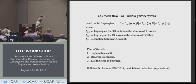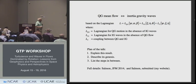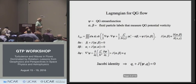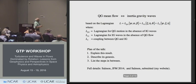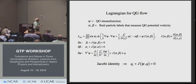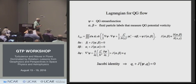You can get the details from two sources: one is a paper I wrote a couple of years ago in JFM, and another paper now under revision which you can get from my website. Let me go back to this Lagrangian and talk about these three pieces in a little more detail. The first one is the Lagrangian for the quasi-geostrophic flow by itself.